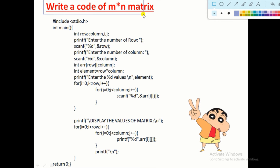The first program: write a code for a matrix M cross N. We need to write this matrix code many times. First, include the header file, then the main function. Declare integer type variables: row, column, i, and j. Then print a message to enter the number of rows and store the value of column inside the column variable. Then declare our array.